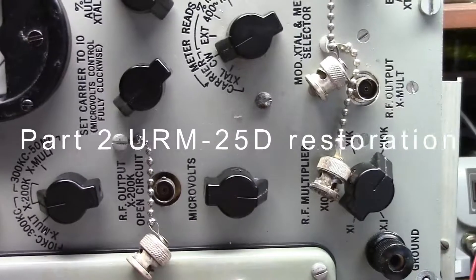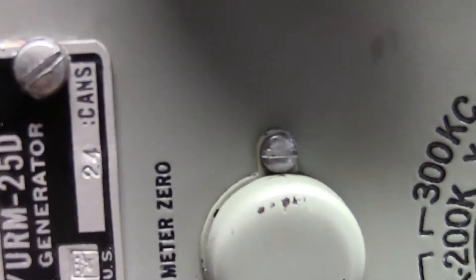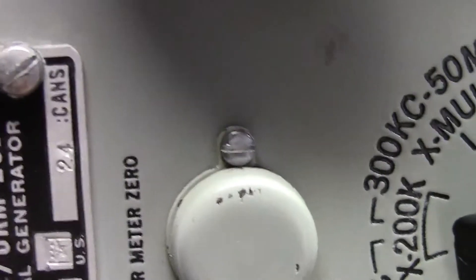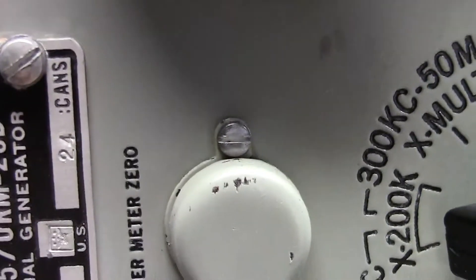Okay, well welcome to part 2 of the URM 25D Restoration. Once again, the name here is Alex, and my ham radio call sign is WA2BMB.